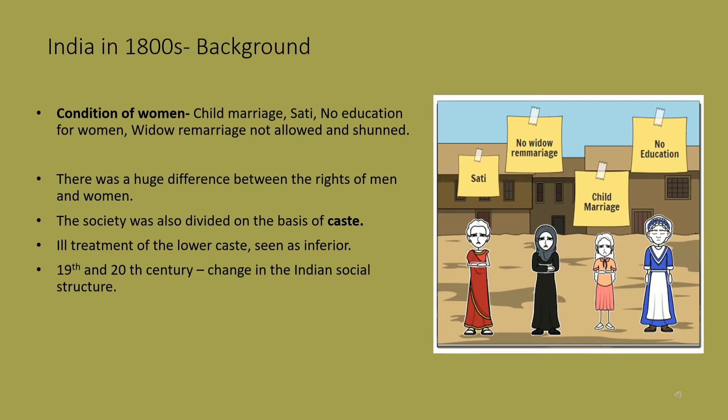Differences based on caste was another social evil. The Brahmins and Kshatriyas were considered the upper caste. Then came the Vaishyas, and the lowest in the hierarchy were the Shudras, who were often subjected to atrocities. However, with time, changes occurred.